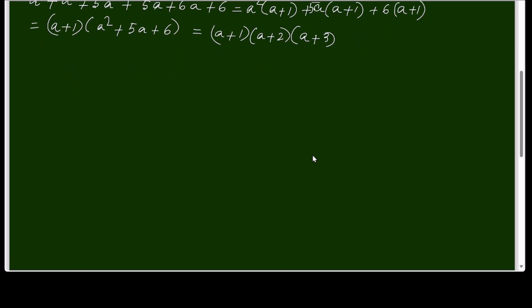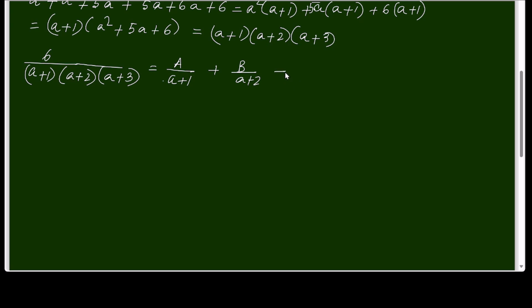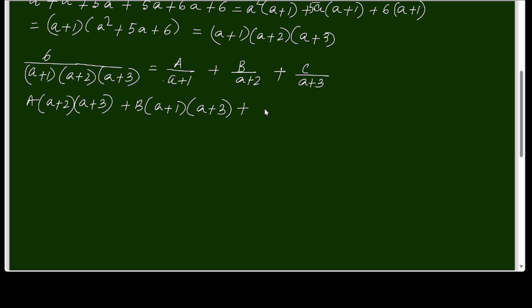Now writing the integral expression: 6 / [(a+1)(a+2)(a+3)] is converted into partial fractions with linear factors: A/(a+1) + B/(a+2) + C/(a+3). So A(a+2)(a+3) + B(a+1)(a+3) + C(a+1)(a+2) = 6, comparing numerators.